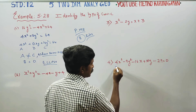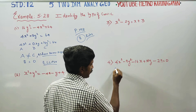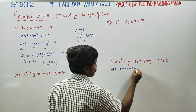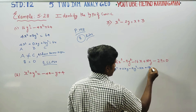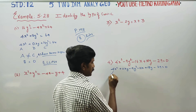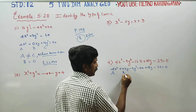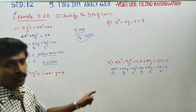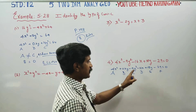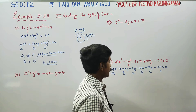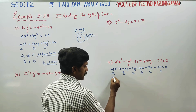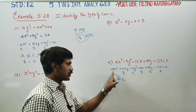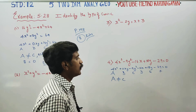The next example: 4x square plus 0xy minus 9y square minus 16x plus 18y minus 29 is equal to 0. Here a is the coefficient of x square, b is the coefficient of xy, c is the coefficient of y square, and d, e, f are the remaining coefficients and constant.